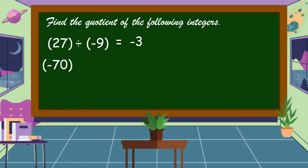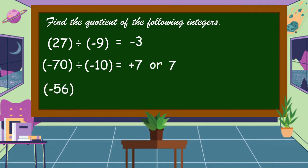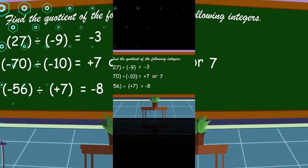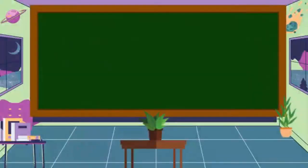Another example: negative 70 divided by negative 10 — 70 divided by 10 is 7, and negative divided by negative is positive, so the answer is positive 7. Next: negative 56 divided by positive 7 — the answer is negative 8. I hope that you understand our lesson for today. Thank you for watching.